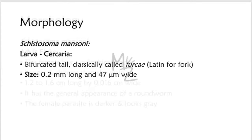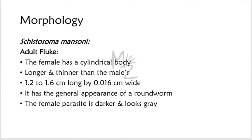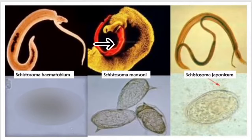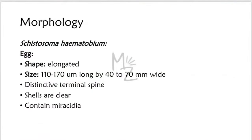The adult fluke of S. mansoni: the female has a cylindrical body, longer and thinner than the male's. It is 1.2 to 1.6 centimeters long by 0.016 centimeters wide. The female parasite is darker and looks gray due to the presence of certain body pigments; normally the adult fluke is white in color. It has a funnel-shaped oral sucker at its anterior end and a second pediculated ventral sucker. In the picture the female is darker and the male has an anterior oral sucker and a posterior ventral sucker.